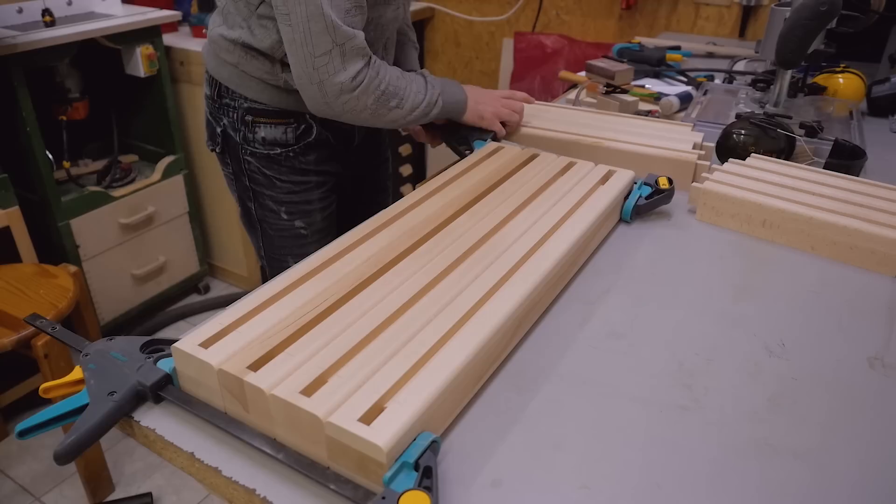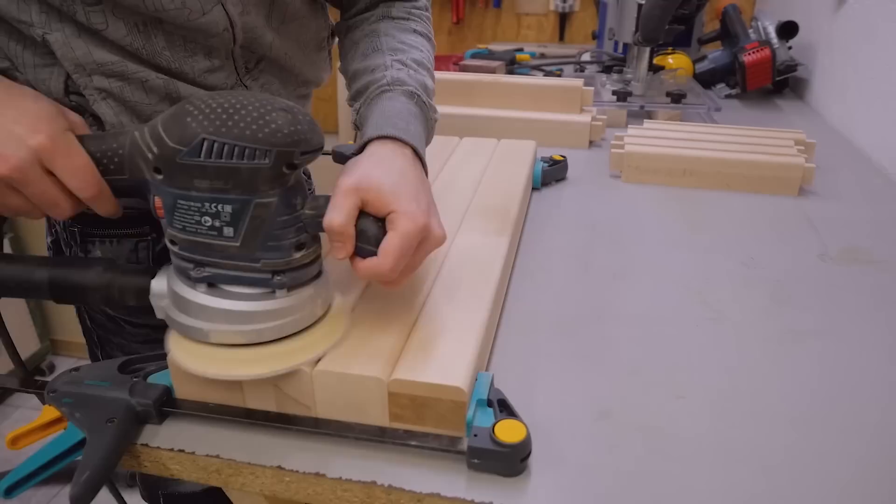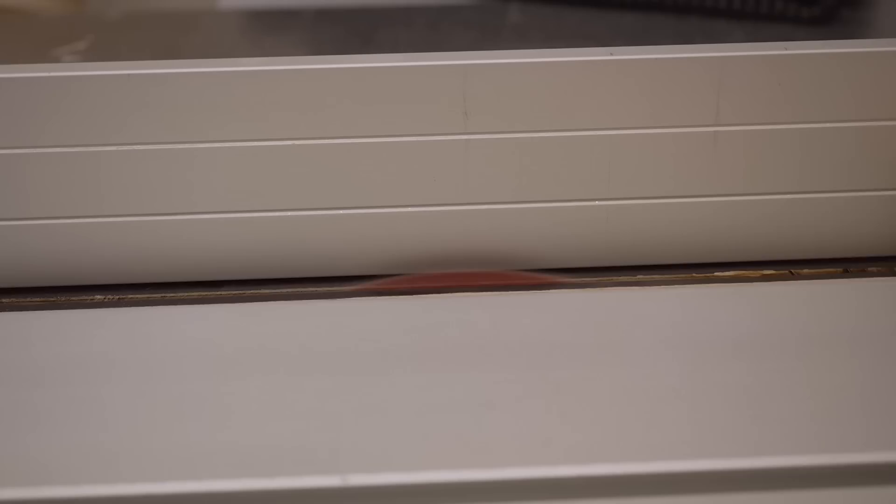All pieces get a round-over on two sides and the legs on all four sides. Now for sanding, I think I can save some time if I clamp all the pieces that have the same size together and sand them at once.